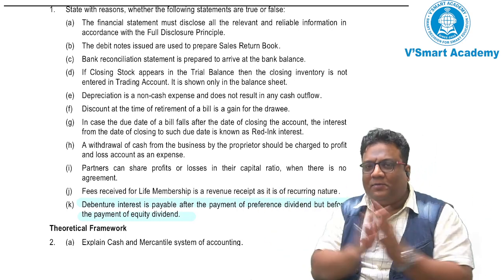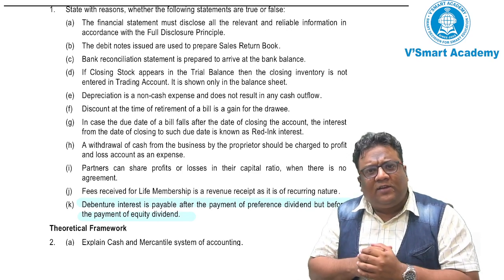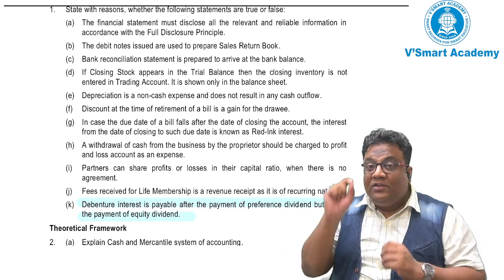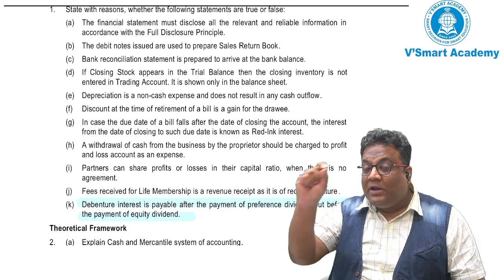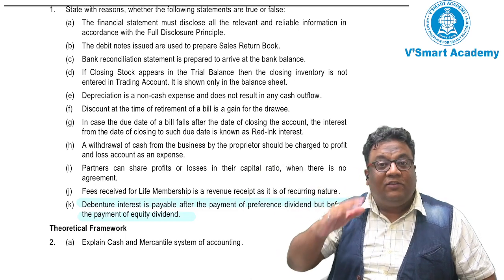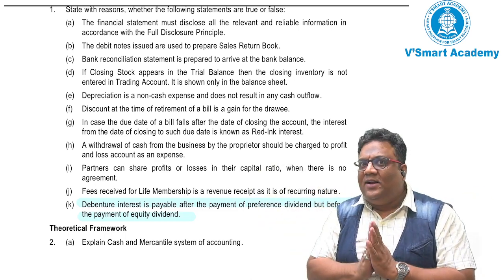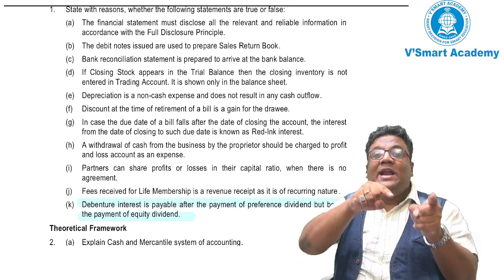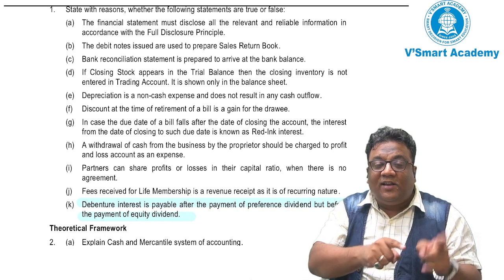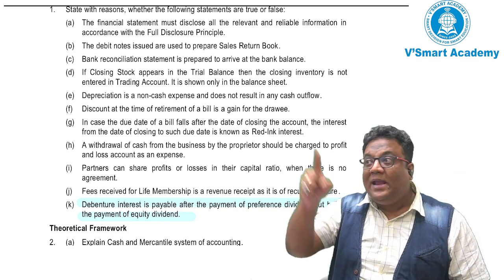So, araam se, sabse pehli baat — preference shareholders ki baat ki jaaye ya equity shareholders ki baat ki jaaye, dono to shareholders hi hai na. Both are owners. Jahan tak debentures ki baat ki jaaye, debenture holders are lenders — yeh hamein loan de raha hai. Debenture is nothing but loan taken from public. So as a result, hum lenders ko priority dete hai over any owner.